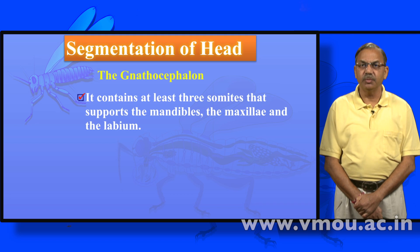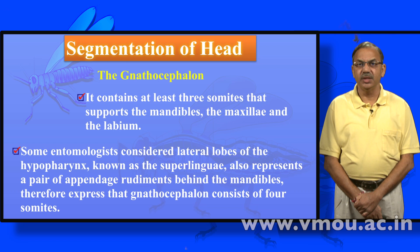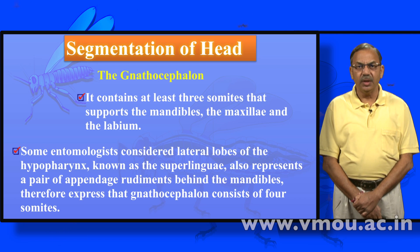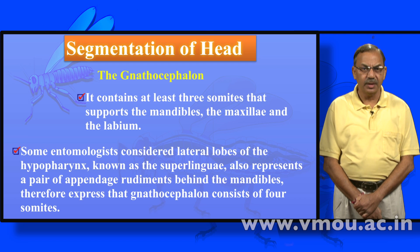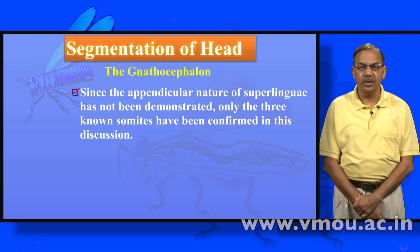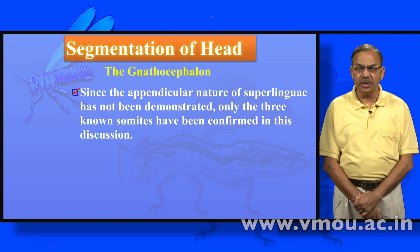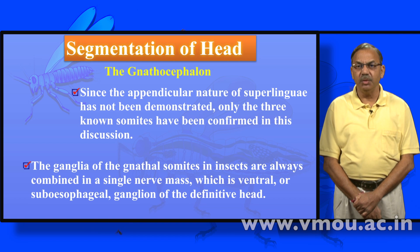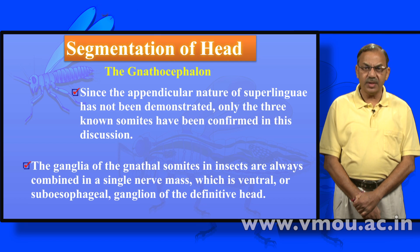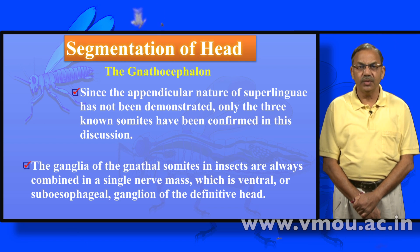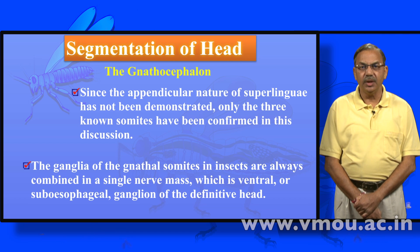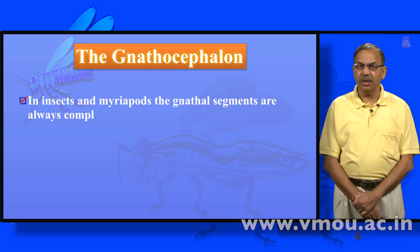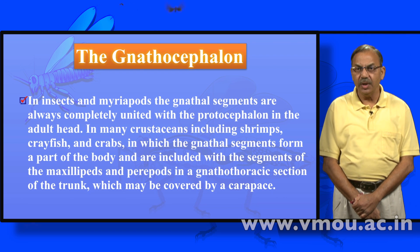The gnathocephalon contains at least three somites that support the mandible, the maxillae, and the labium. Some entomologists consider the lateral lobe of the hypopharynx, known as the superlinguae, also represents a pair of appendage rudiments behind the mandible — therefore expressing that the gnathocephalon consists of four somites. Since the appendicular nature of superlinguae has not been demonstrated, only the three known somites are confirmed. The ganglia of the gnathocephalon in insects are always combined in a single nerve mass — the ventral or subesophageal ganglion. In insects and myriapods, the gnathal segments are always completely united with the protocephalon in the adult head.